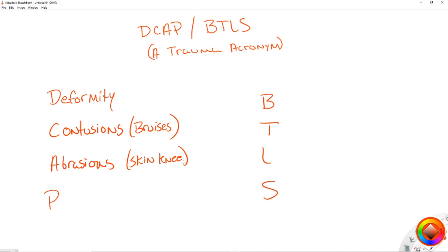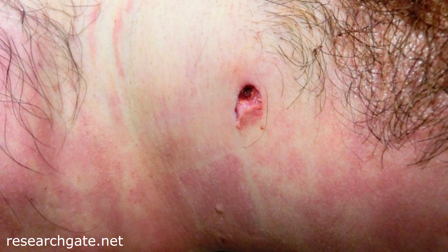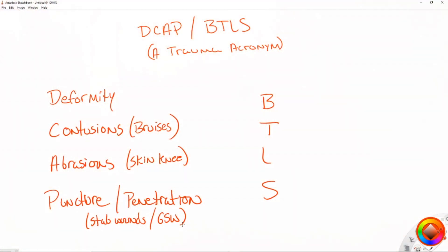The next thing is a puncture or penetration. Think stab wounds or GSWs — gunshot wounds. These are areas where something forcefully enters the body in a puncture-type manner. Maybe a piece of steel rebar goes through your hand, or a knife wound where someone stabs you — those are puncture wounds. A penetrating trauma might be a gunshot wound where a bullet penetrates your skin and goes through muscle and organ tissue.